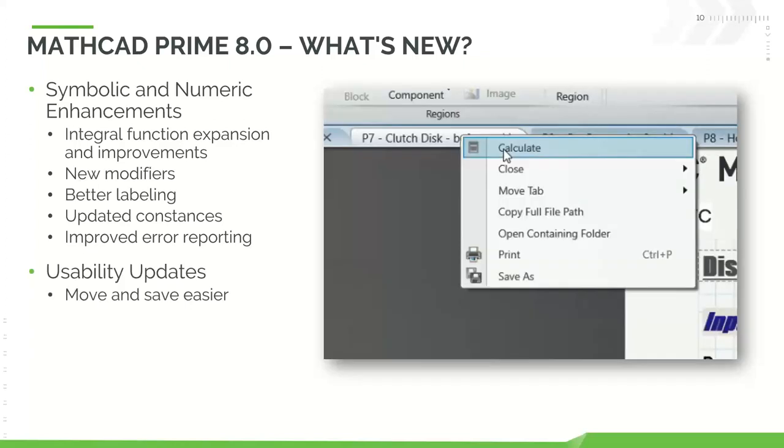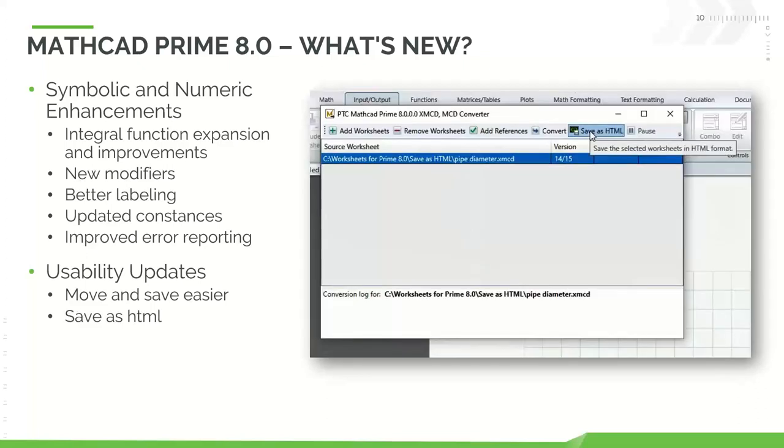And then also general usability. This is a large area of focus in Mathcad. And we continue to make improvements here based on any feedback that we get from our customers. It includes making or moving and saving all the different tabs that we have in the areas of our worksheet. It makes that much easier to move this around and get context-sensitive information from each of those tabs. And from there, we can also now take any of the worksheets and save those out as an HTML to send to others, whoever really needs that.